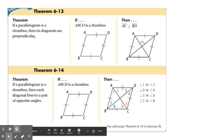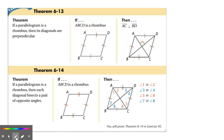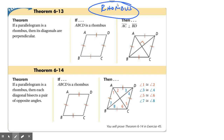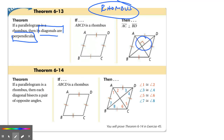So here are some other special properties of a rhombus. First, its diagonals are perpendicular. When you think of perpendicular, you need to think of right angles — it forms right angles. So let's verify this on Desmos geometry.